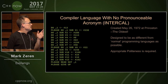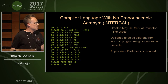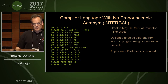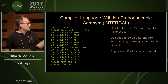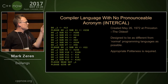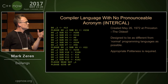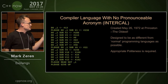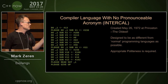The next one is the compiler language with no pronounceable acronym, which is of course called INTERCAL. Its claim to fame is it's the oldest one, and one of the things I like about it is that it requires some degree of politeness — you must say please, but not too often, or it's a syntax error.